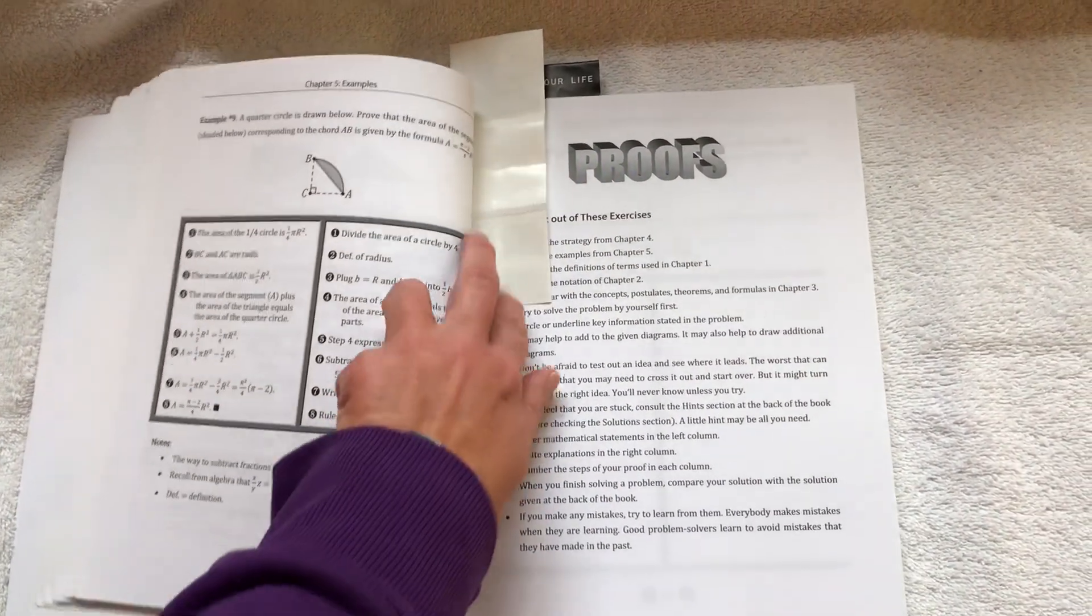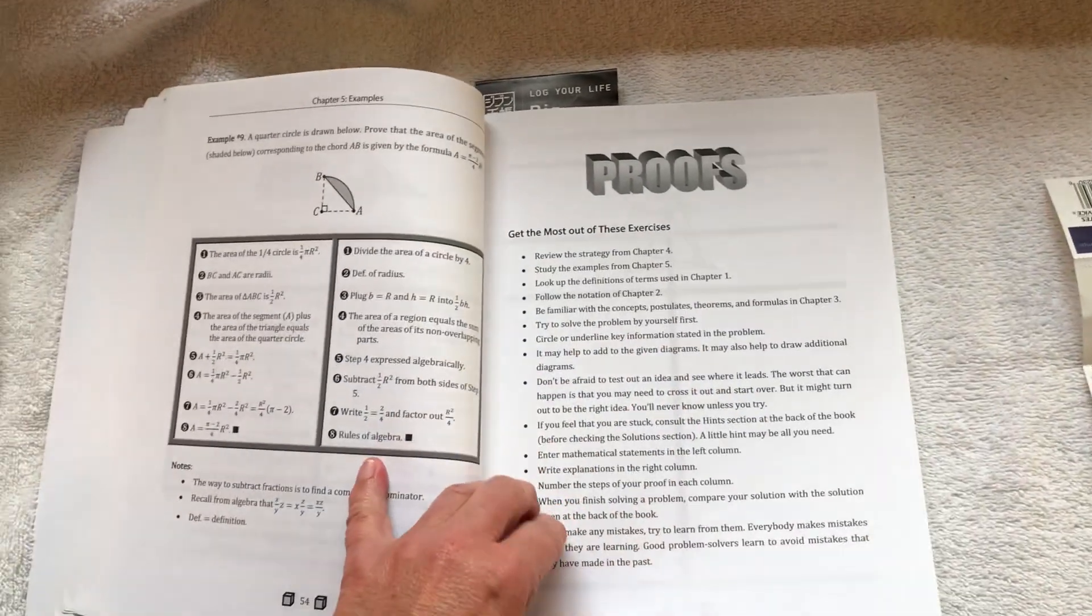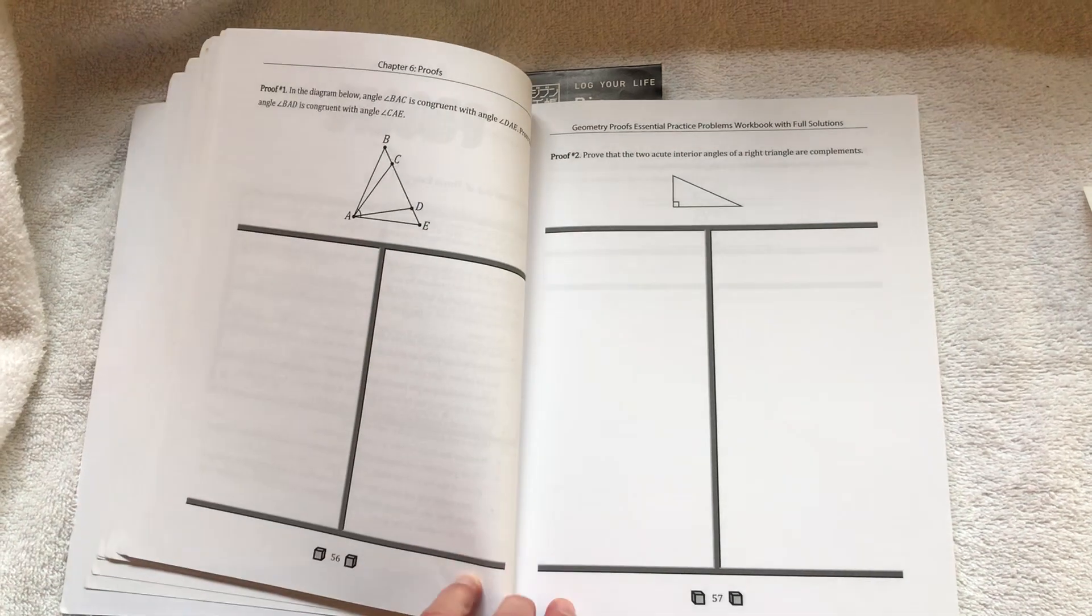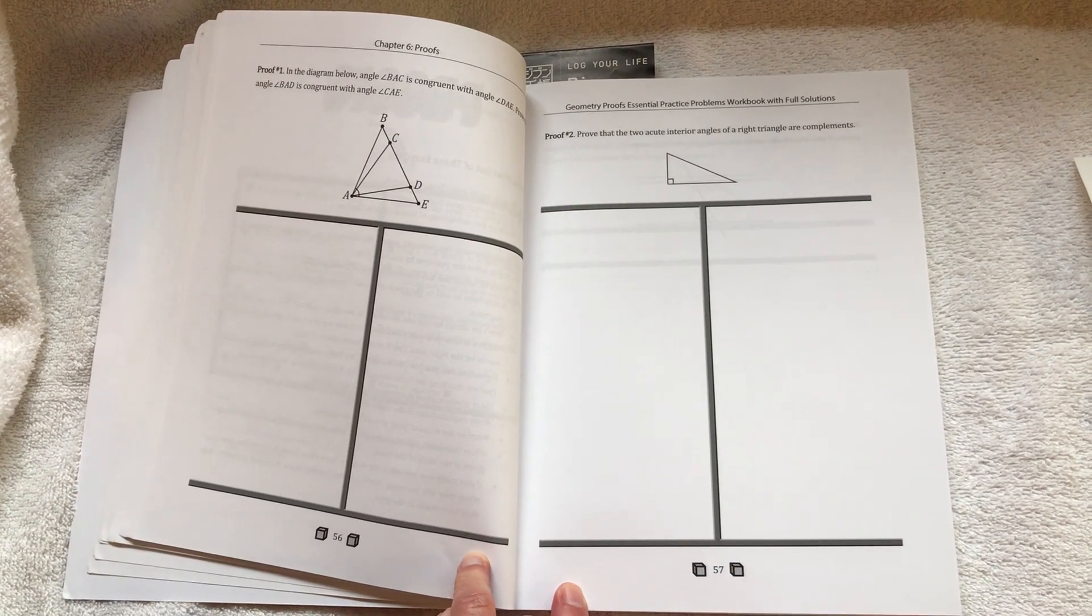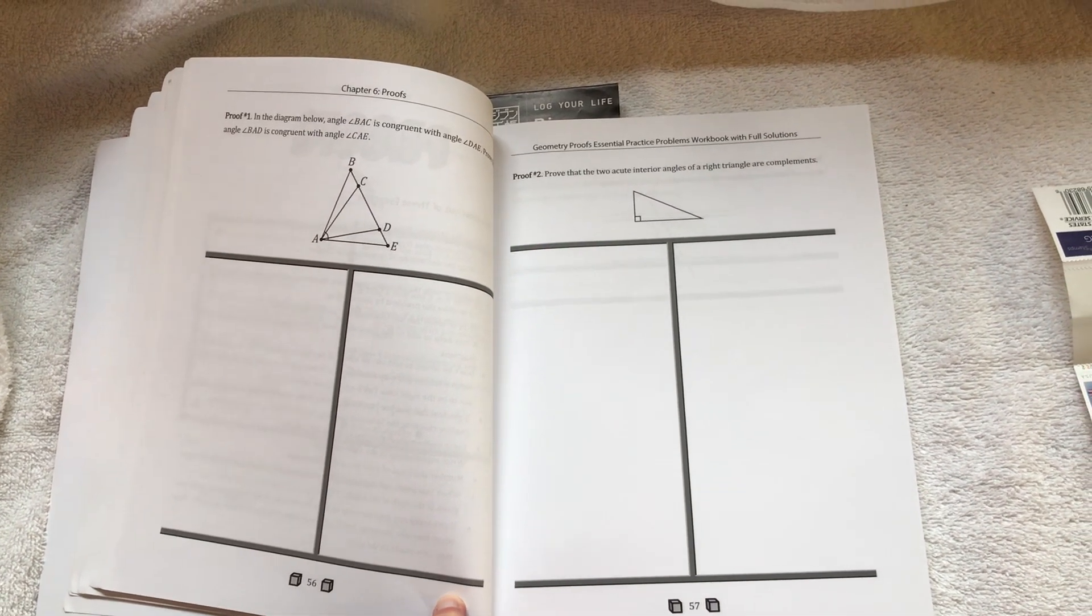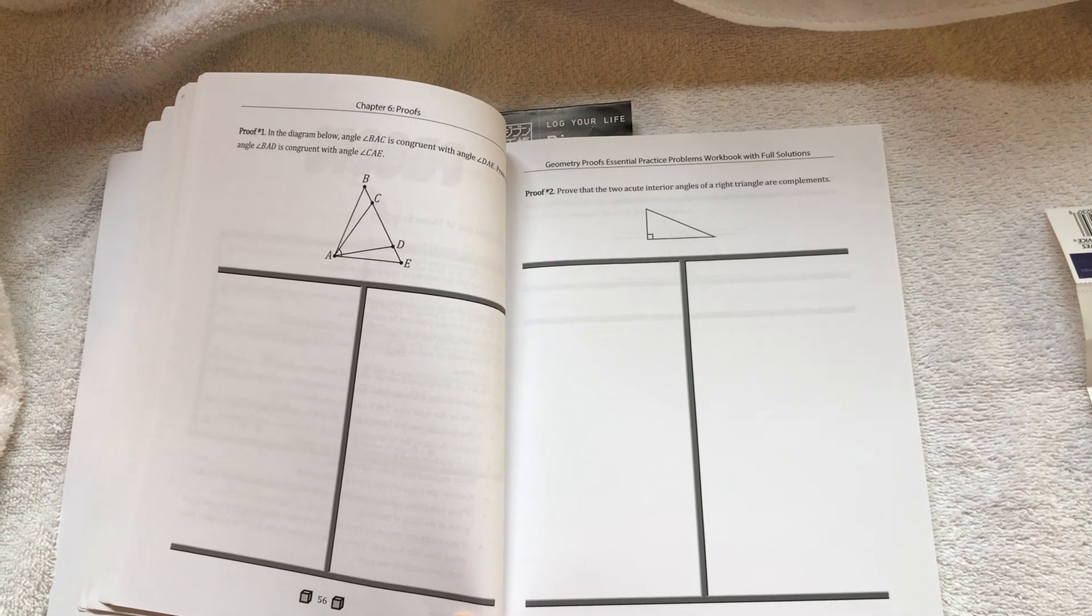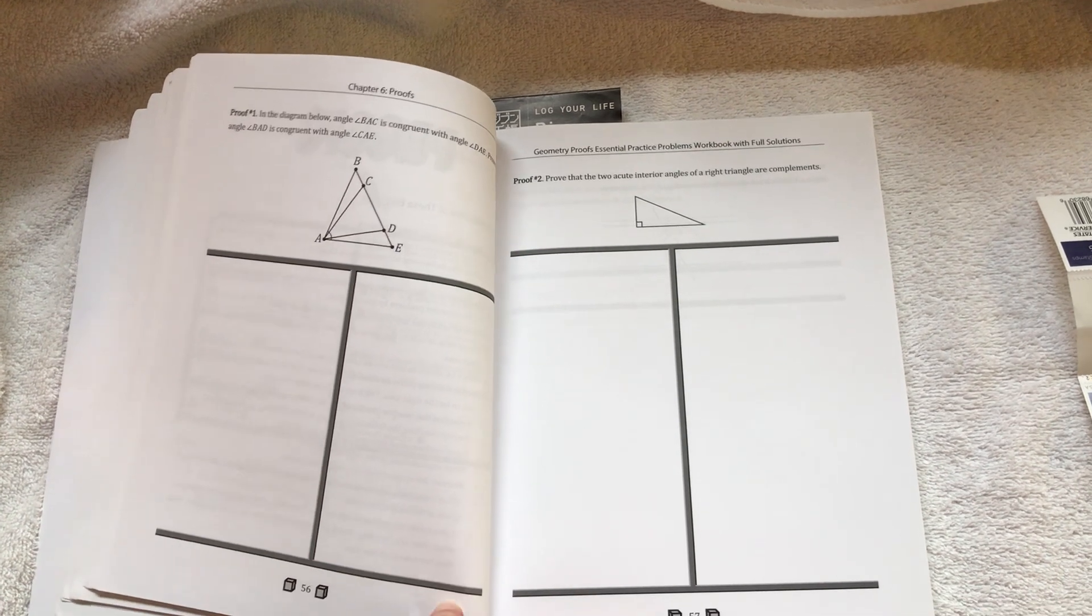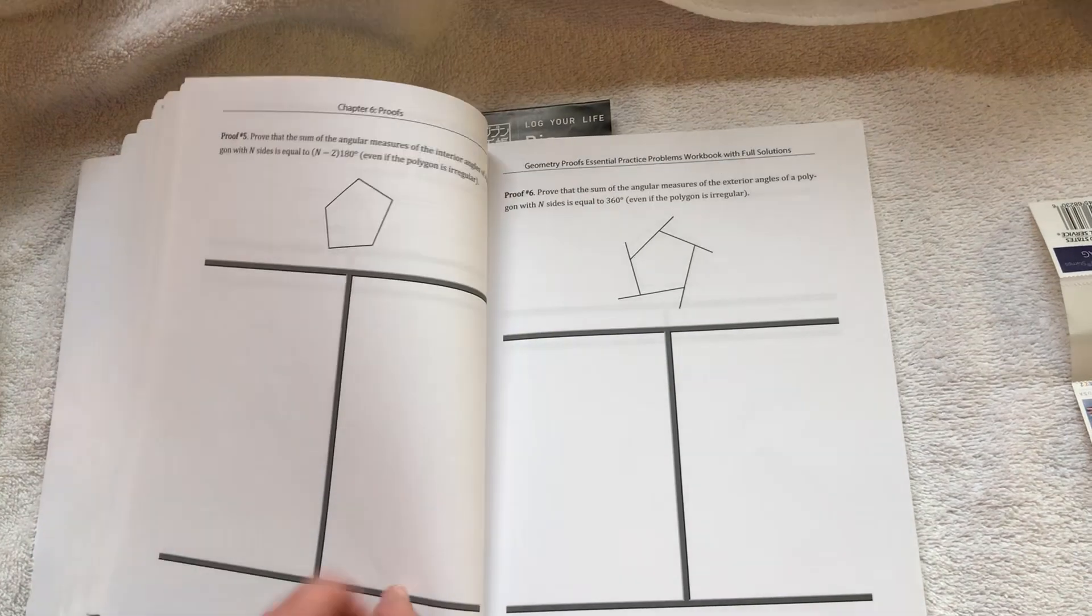And here you get to the actual part where you do proofs. There you go, unlike the other two workbooks it's all blank, you got to do the work. He doesn't have the nice little clear given statement, you kind of have to write that out. But they start out rather easy.